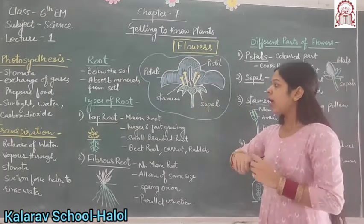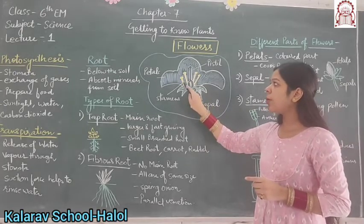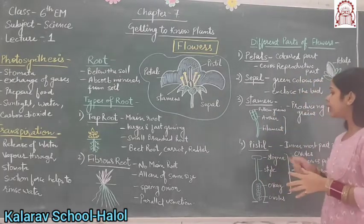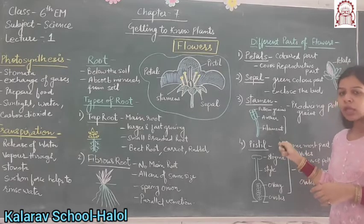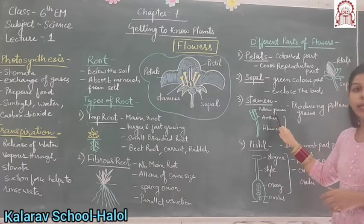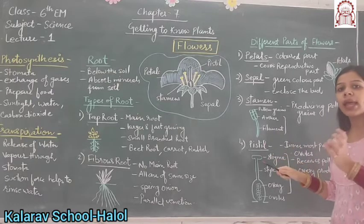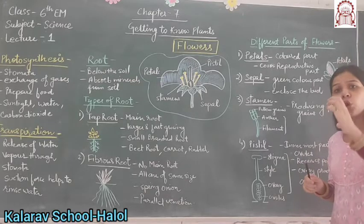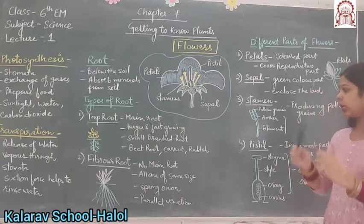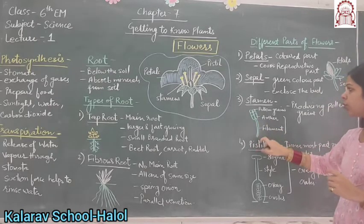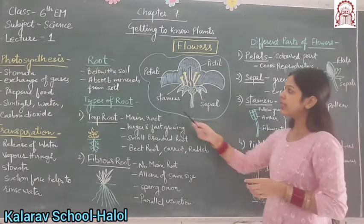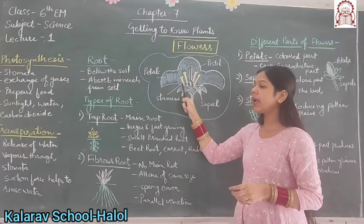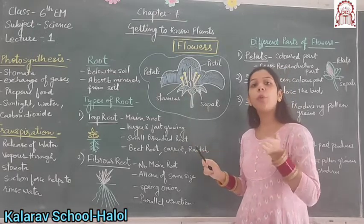Number three is stamen. The yellow part is called stamen. Stamen consists of mainly two parts: anther and filament. Anther produces pollen grains, which are helpful for reproduction. Filament is a stalk which provides support to the anther. So stamen has two parts — anther and filament — and anther contains pollen grains.